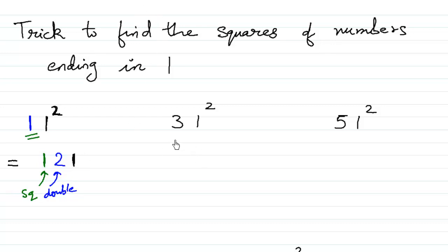So let us understand with another example. What is the square of 31? The last digit will always be 1 because 1 squared is 1. What is the double of 3? 3 times 2 is 6. And then what is the square of 3? 3 squared is 3 times 3 is 9. So the answer to 31 squared is 961.